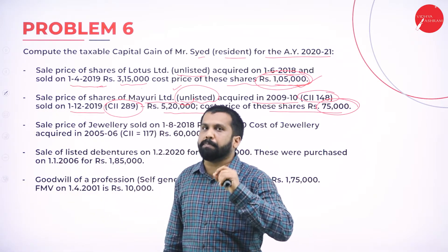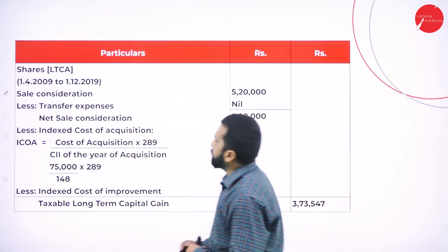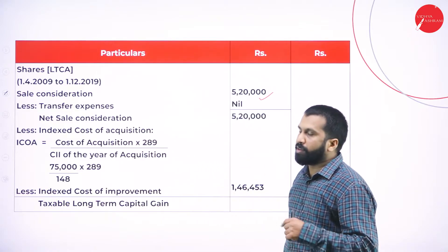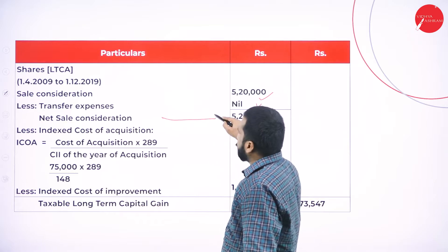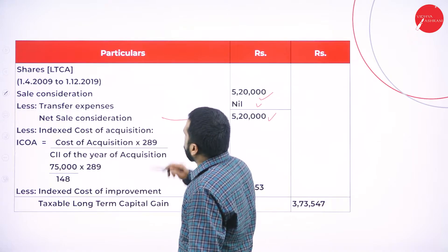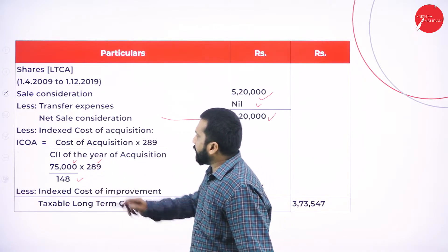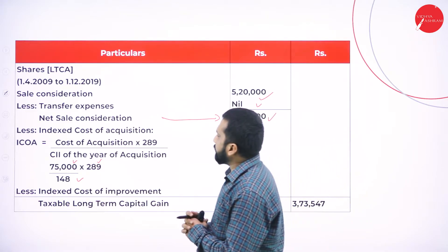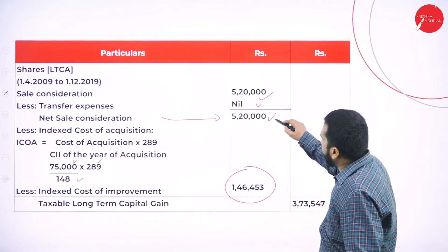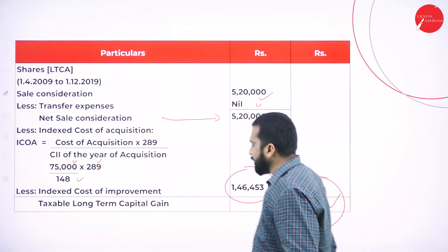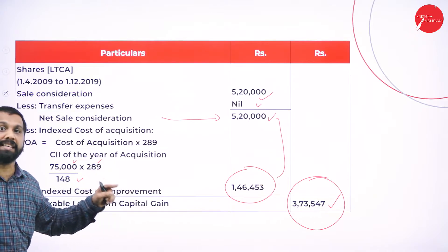For the long term capital gain on Mayuri Limited: sale consideration is 5,20,000, transfer price nil, so net sale consideration is 5,20,000. Index cost of acquisition: 75,000 multiplied by 289 divided by 148 equals 1,46,453. From 5,20,000 minus 1,46,453, your final answer is 3,73,547. Second one is done.